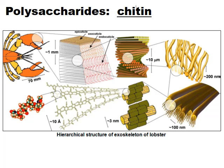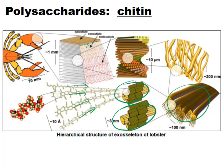The straight chain chitin polymers are cross-linked by hydrogen bonds to form microfibrils, and microfibrils come together to form macrofibrils. The microfibrils orientate in a specific manner to produce the thick, strong exoskeleton found on the outside of crustaceans such as the lobster. This makes chitin even tougher and stronger than a plant cell wall.